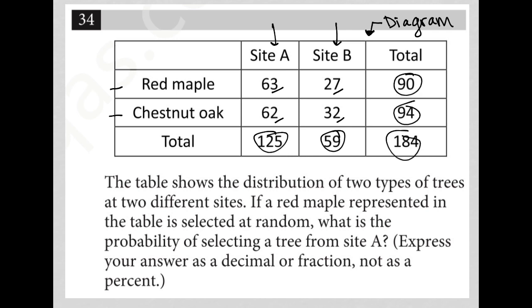So let's look at the question. The table shows the distribution of two types of trees at two different sites. If a red maple represented in the table is selected at random - okay, so first of all, let's talk about that.